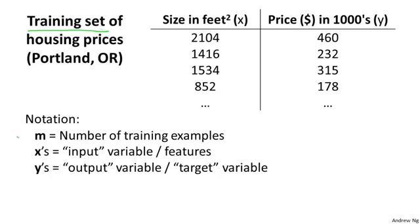So I'm going to use lowercase m throughout this course to denote the number of training examples. So in this data set, if I have, let's say 47 rows in this table, then I have 47 training examples and m equals 47. I'm going to use lowercase x to denote the input variables, often also called the features. And I'm going to use y to denote my output variables or the target variable which I'm trying to predict. And so that's this second column here.